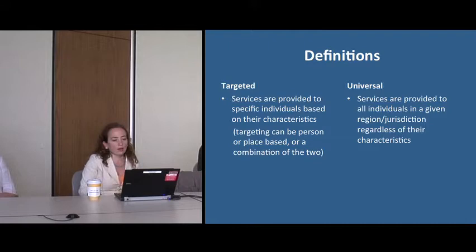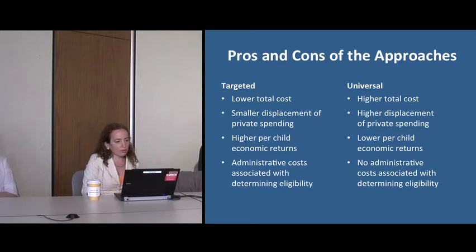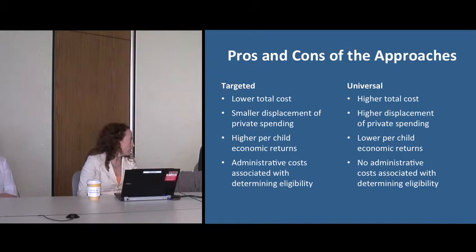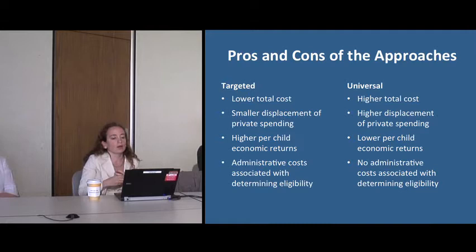Universal services are provided to all individuals in a given area. I've intentionally avoided the issue of whether they're free or subsidized, since that's not central to today's question. In terms of pros and cons, targeted interventions generally cost less because not everyone is receiving the intervention. There's also smaller displacement of private spending — if you make preschool free for everyone, you're putting a burden on taxpayers rather than the parents who could already afford it. Targeted services have also been found to have higher per-child returns.